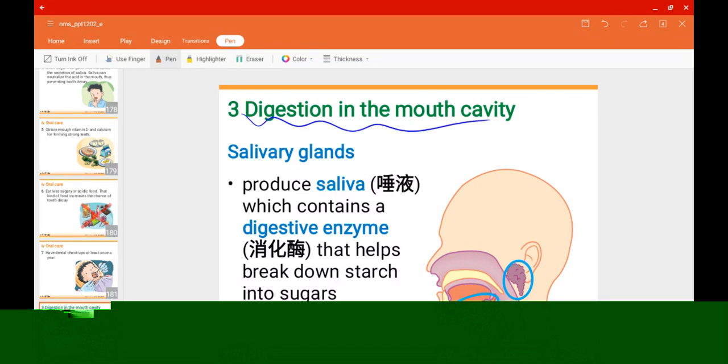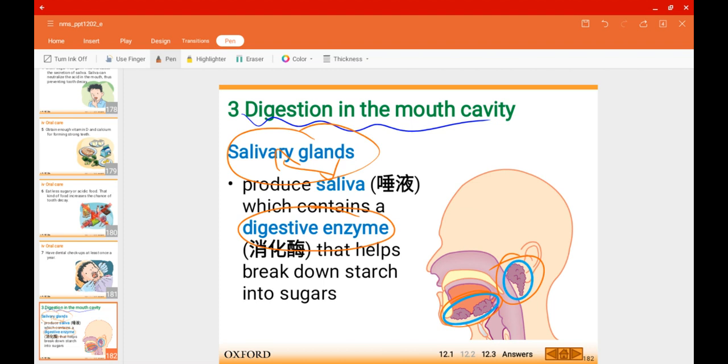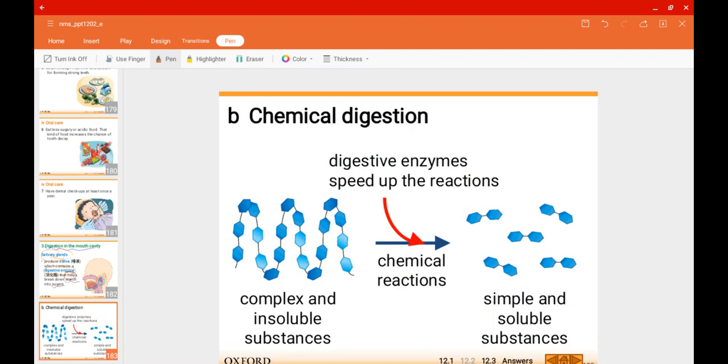In our mouth cavity we have the salivary glands, which are already circled over here. As the name suggests, it produces saliva which contains a digestive enzyme. In a minute I'll talk about what is an enzyme, but simply speaking it helps to break down starch into sugars. Starch is the more complex form of carbohydrates and sugar is the more simple form. With the help of the enzymes, the starch is digested into sugars, speeding up this chemical reaction.